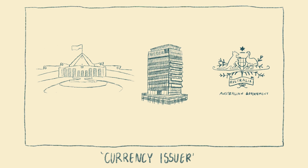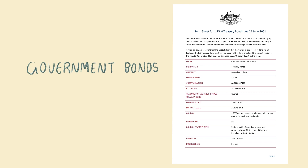The Australian government is a currency-issuing government. It can't run out of Australian dollars. It's never forced to borrow Australian dollars, although it can and does choose to do so. Government bonds — debt — provide a risk-free asset for investors to park their money and gain a guaranteed return. This is no more than corporate welfare.